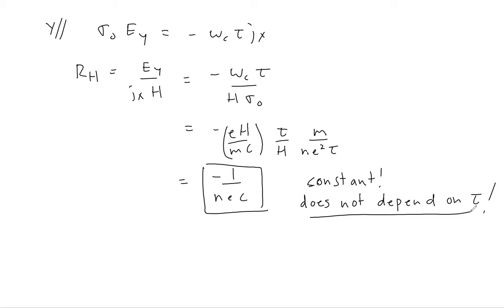Even though tau was invoked to derive this result, it cancelled out in the end. This is actually one of the most useful features of the Drude model in practice: measuring the Hall coefficient is a very common way to extract the electron density n in a system, and the result R_H = minus 1/(n·e·c) does not depend on tau. Indeed, for many metals this expression holds to a very good approximation — this is one of the triumphs of the Drude model. We'll return next time to discuss other features of the Drude model.